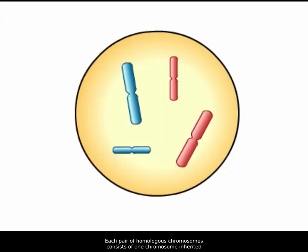Each pair of homologous chromosomes consists of one chromosome inherited from the father and one from the mother. Here we have color-coded them blue and red.